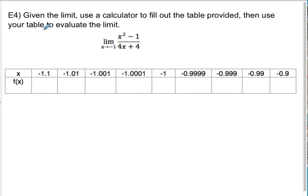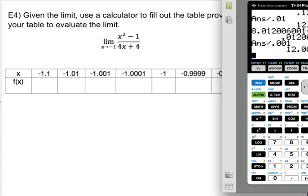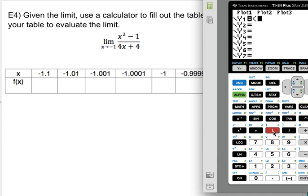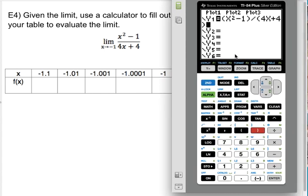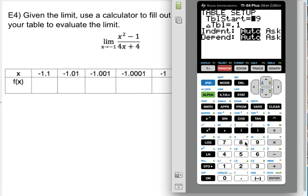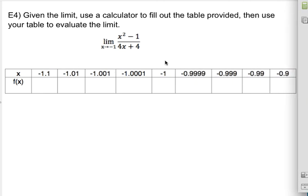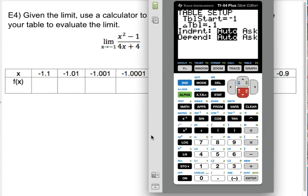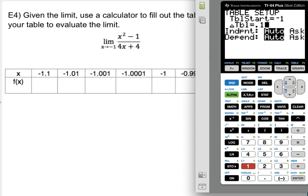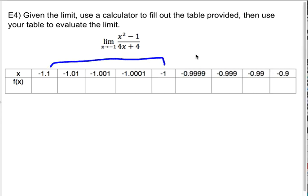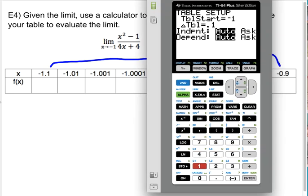Alright, so we're going to use a calculator. So given the limit, use a calculator to fill out the table provided and then use the table to evaluate the limit. So we're going to go ahead and type this into our calculator. You can ignore all of the gibberish. So in parentheses, I'm going to type in x squared minus 1 parentheses divided by in parentheses 4x plus 4. Okay, now here's a trick when you go to table. So fun little trick. I'm going to go to table. So I'm going to second window and I'm going to table. I want to start my table at whatever the middle value is. So I'm going to start it at negative 1. But then these are not the same increment. So in order to fill out my table, the easiest way to do your table is to start by going by 0.1s.